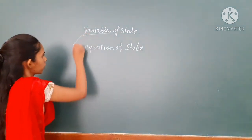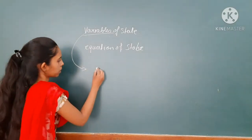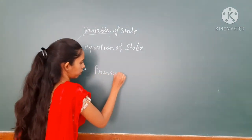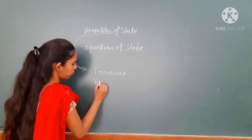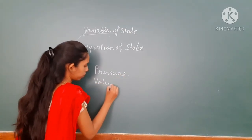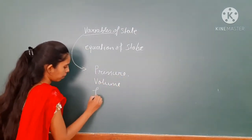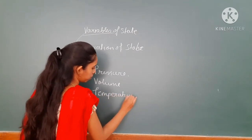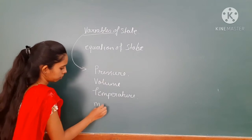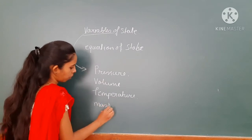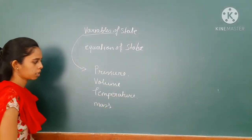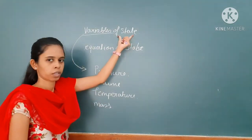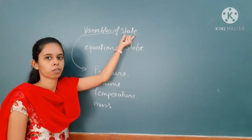Now what are these variables? The variables are: pressure, volume, temperature, and mass of the gas or system. So according to these variables you can describe the state of that system.